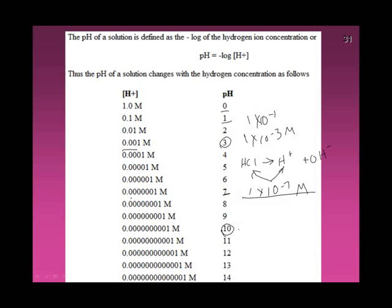One thing you should see is that pH equals the negative of the exponent. A pH of 3 is the same as the negative of the exponent minus 3. A pH of 7 is the same as the negative of exponent minus 7. A scientist named Sorensen came up with this scale as a simpler way of expressing concentration than using molarity.